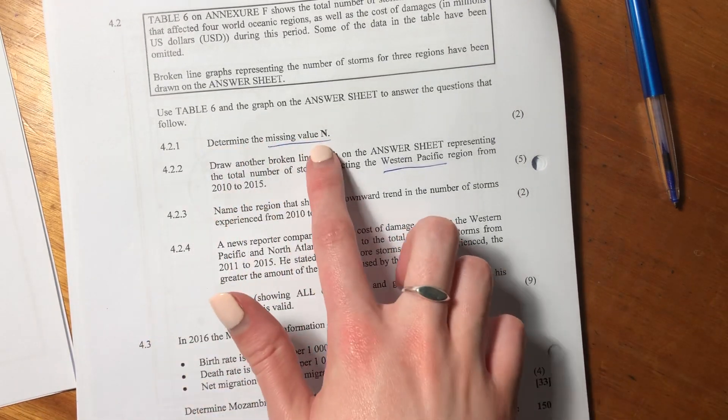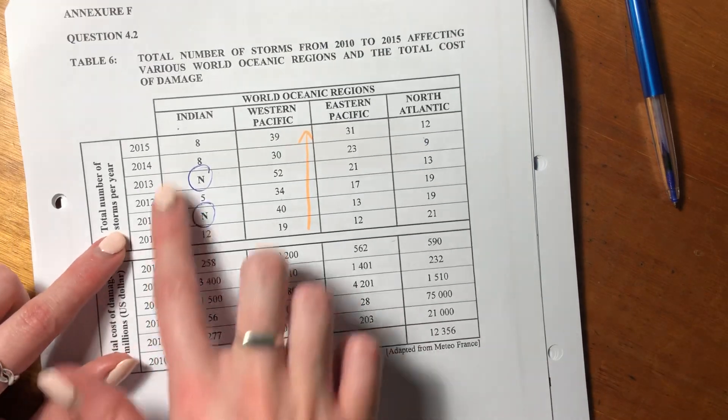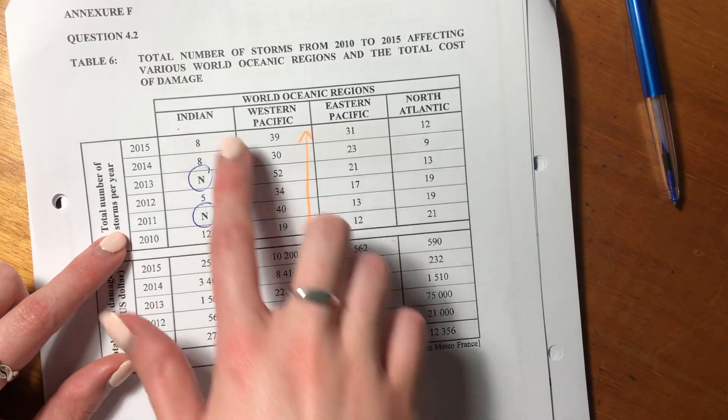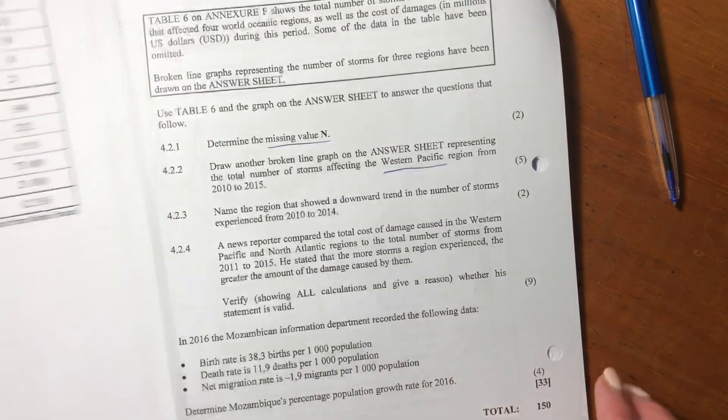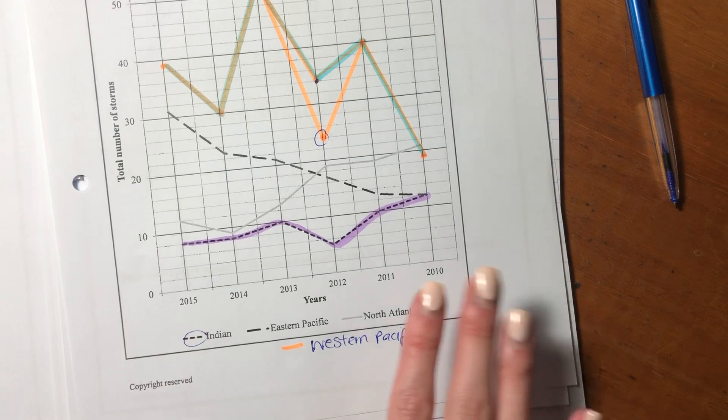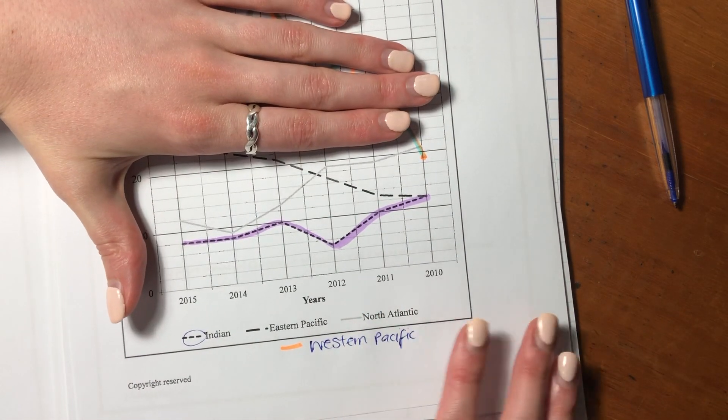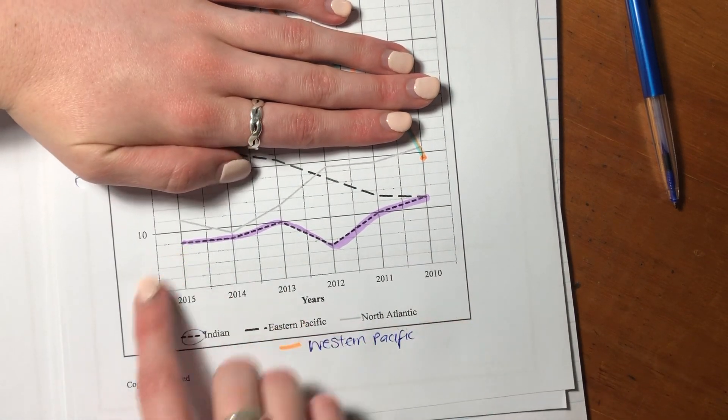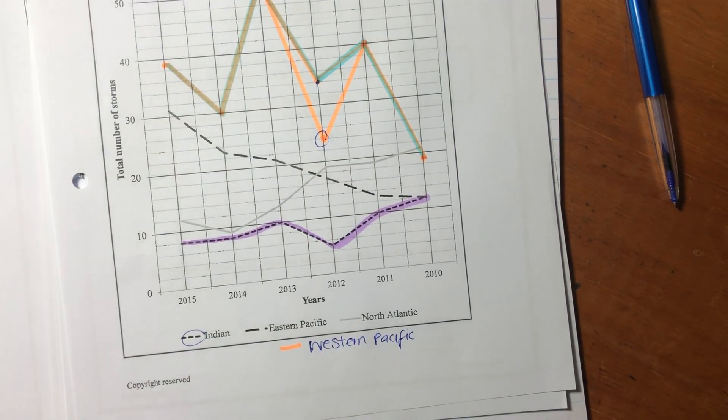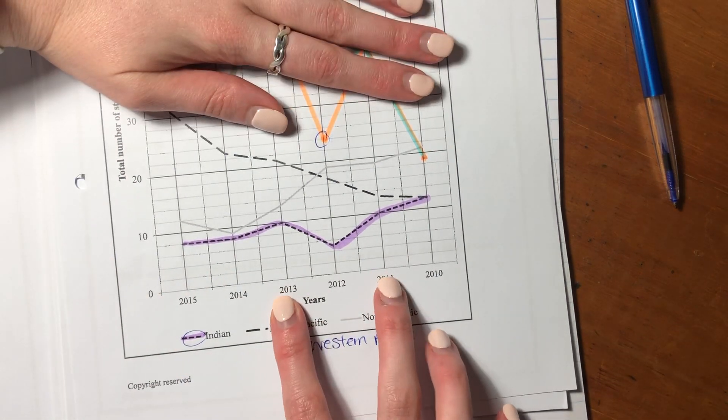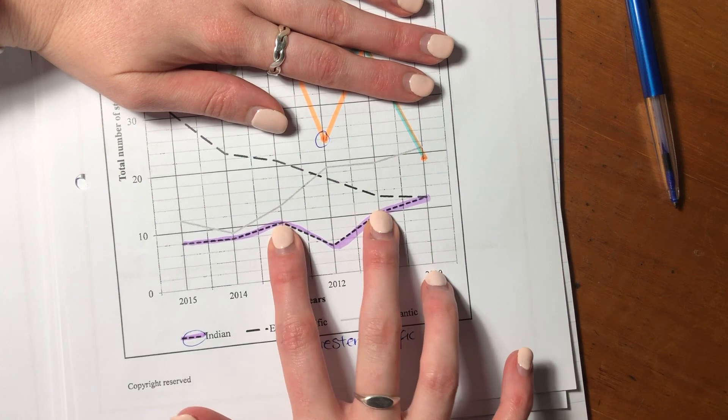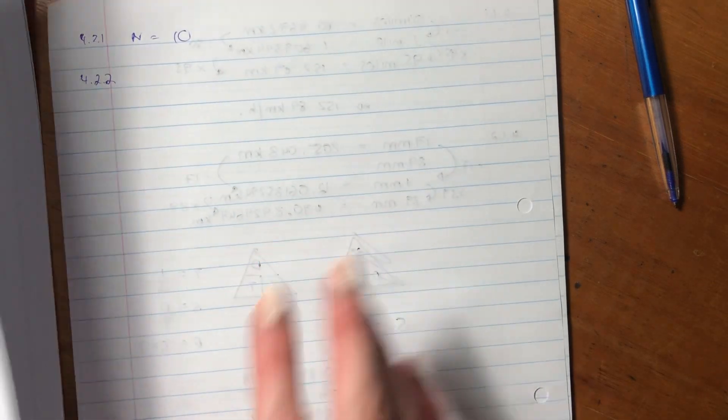So it says determine the missing value n. The missing value n here is for the Indian region, for 2011 and for 2013. And we see that's n in both cases, so we think it's probably going to be equal. But we don't know from that information, we have to go over here to the graphs. Ignore what I've drawn up there, that was a mistake I made, so that's why I'm refilming here. The purple is the Indian. And we see in 2013 and 2011, it was 10. So it was the same for the Indian. So n equals 10.